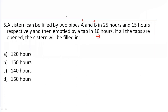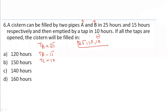This is similar to the previous question — just different values. Write down the values: time taken by A is 25, time taken by B is 15, and time taken by C is 10 hours. Now find the LCM of 25, 15, and 10. Breaking them down: 5 fives, 5 threes, and 5 twos — the LCM is 150.